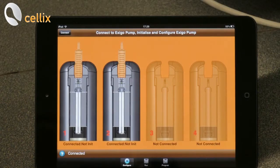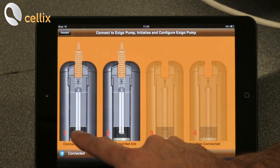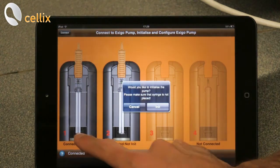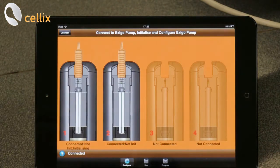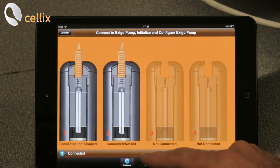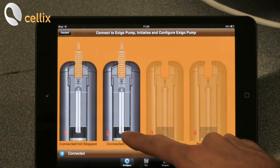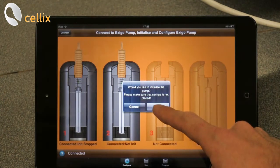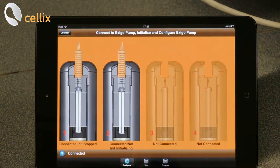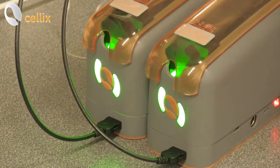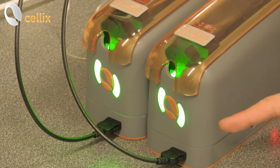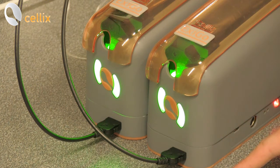So in order to be able to use the pumps we have to initialize them so we click on the syringe guide here and we click initialize. We do the same operation for the pump number two. Double click, initialize. We can see the green lights in front of the pumps. This means that the pumps have been correctly initialized.